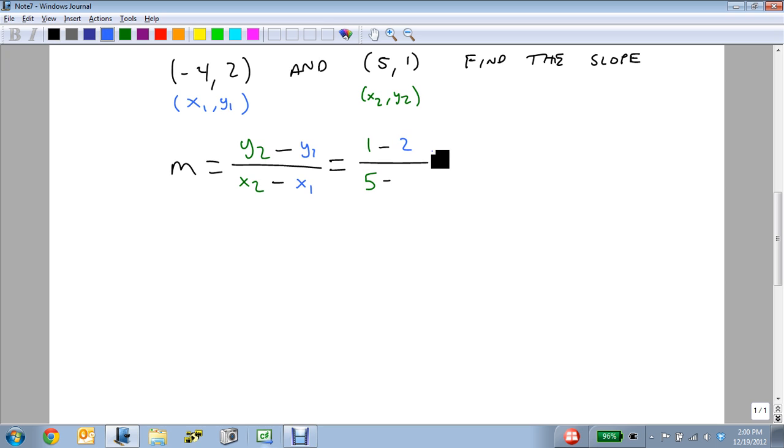Minus 2 on top, and a minus 4 on bottom. 1 minus 2 is minus 1. 5 minus a minus 4 is 9. So our slope is minus 1 over 9, or negative 1 over 9. Both will be accepted. And that's how we find the slope if we're given 2 points.